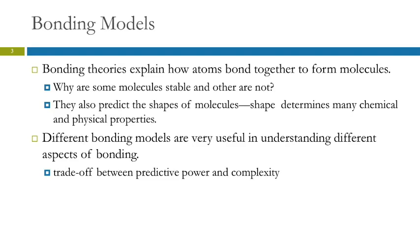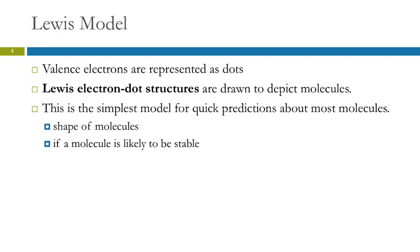So there are several different bonding models. And as with many things, you get a tradeoff between complexity and predictive power. It's more useful if it's more complex, but then it's also harder to understand. We're going to look at the Lewis model first. This is the simplest one — it's great for quick predictions and it works a lot of the time. Here we represent valence electrons as dots, and so the structures are called Lewis electron dot structures. We can predict shapes of molecules and whether a molecule is likely to be stable.